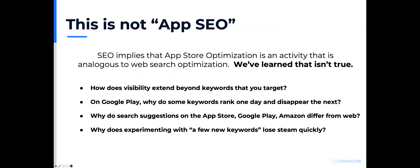When thinking about SEO, it's important to understand that app store optimization is similar in some ways: you want to improve conversion, rank for more keywords, and improve your organics. But the process really isn't the same. We don't like to say ASO is app SEO — it's incredibly misleading. In the ASO world, visibility for your app extends beyond the keywords you target.